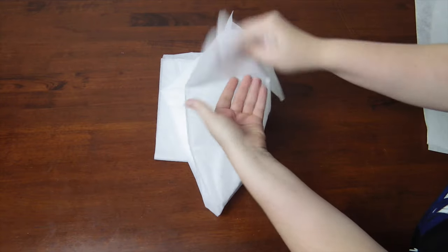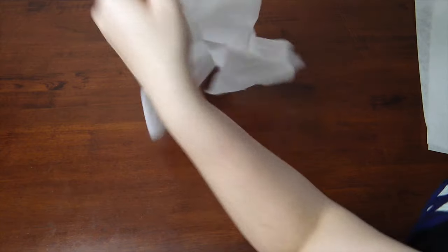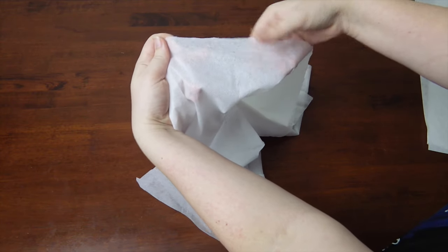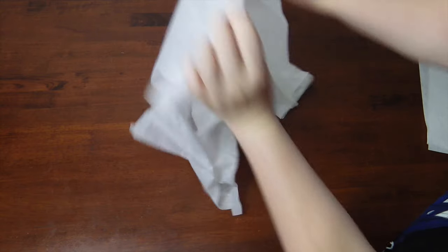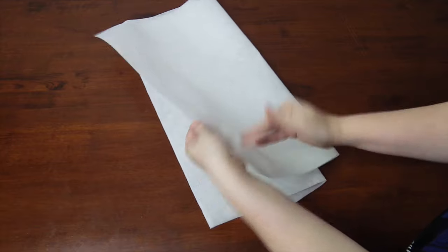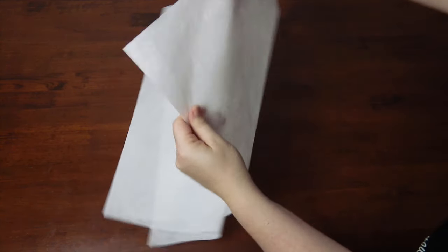Interfacing also comes in two sorts, fusible or ironing, and sewable. You can tell fusible interfacing as one side will have little glue dots on it. These will fuse to fabric when you iron it in. On the other hand, you'll be able to tell sewable interfacing as there's no glue dots, and it looks identical on both sides.